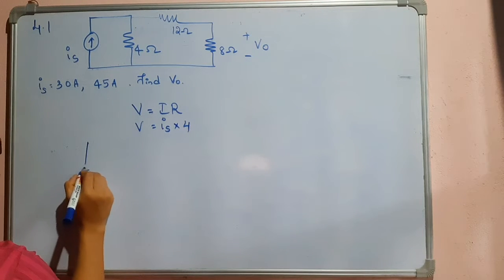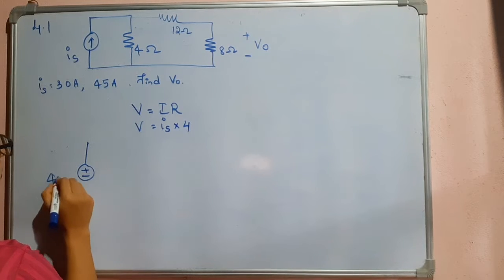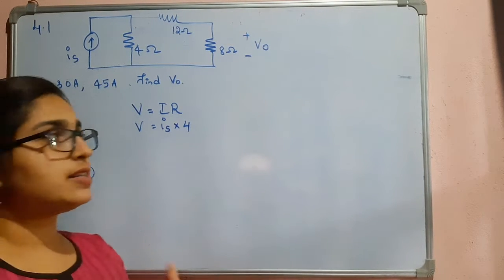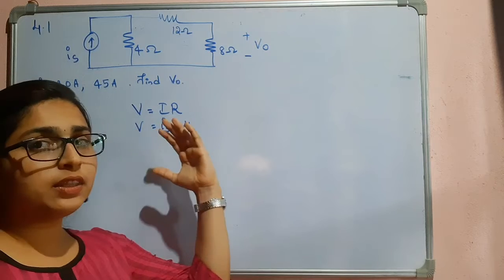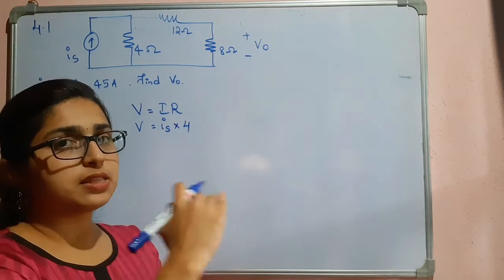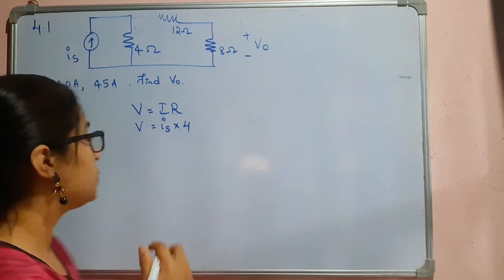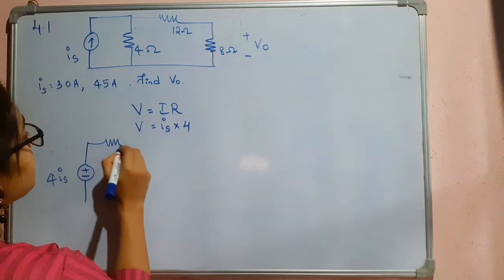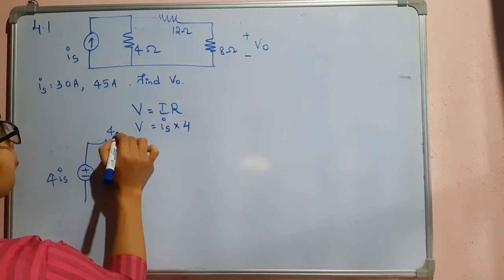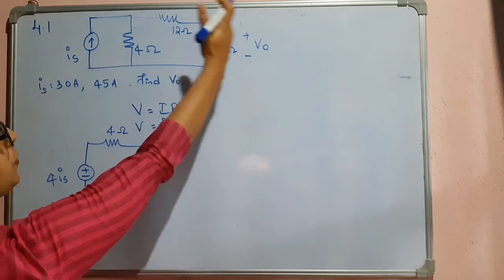Now I will replace this with 4IS voltage source, and you know that the resistance which was in parallel with the current source now comes in series with the voltage source. So it comes in series here, that is 4 ohm.